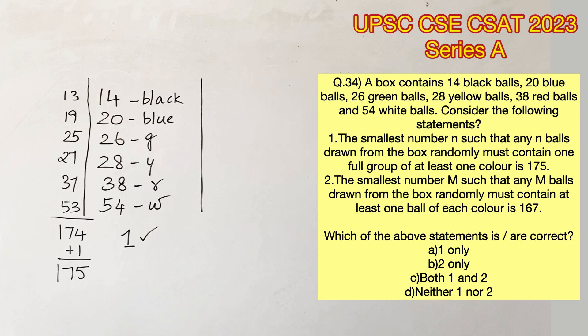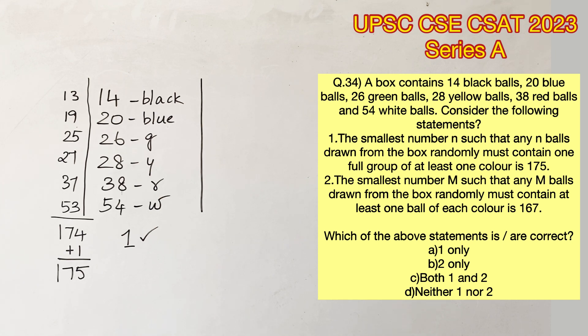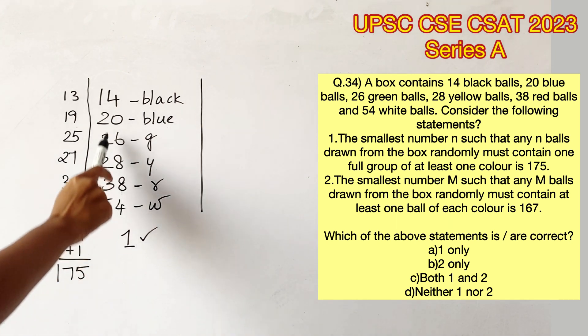So all we have to do is find the worst-case scenario. If you notice, the color that has the minimum number of balls is black. Therefore, the worst-case scenario would be that we choose all the rest of the color balls.